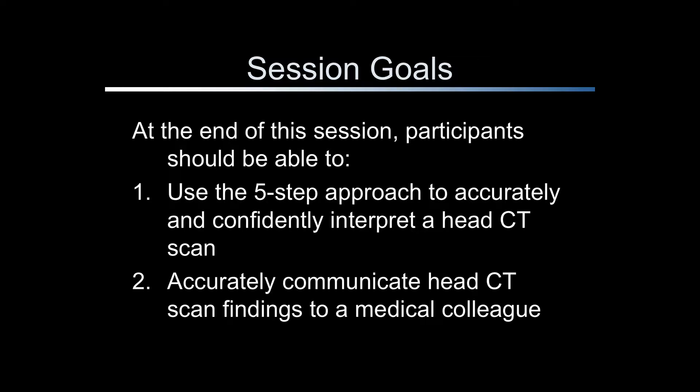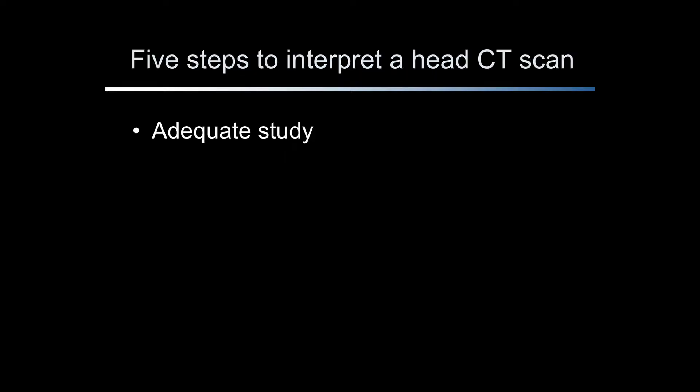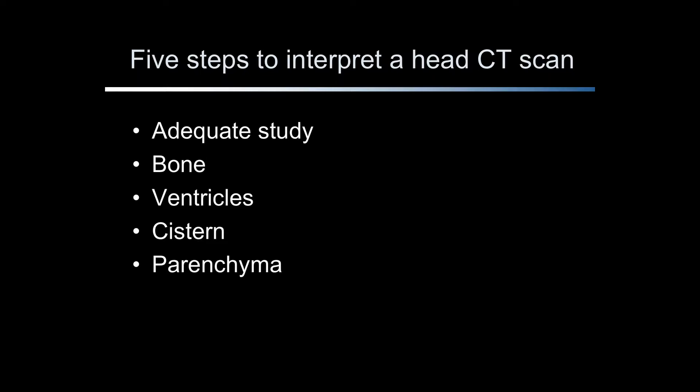Secondly, they will be able to accurately communicate head CT findings to a medical colleague. The five-step approach begins with ensuring the study is adequate for interpretation. The bone windows are then evaluated for fractures and soft tissue swelling. The ventricles are then carefully inspected for effacement and symmetry. The quadrigeminal cistern is a critical structure for identifying abnormality because of its proximity to the tentorium and circle of Willis. Finally, the brain parenchyma must be evaluated for disease or injury.